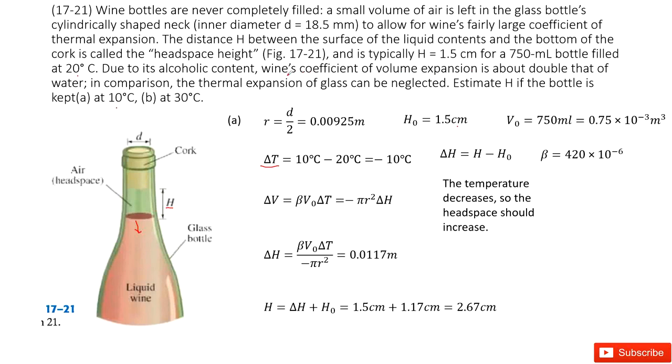We can see what other quantity is given there. It gives us this liquid coefficient of volume expansion is about double that of water. So you can get it there. Because we know the coefficient for water is 210 times 10 power negative 6. Then doubled. So this liquid beta is 420 times 10 power negative 6. So this is all the quantity given.